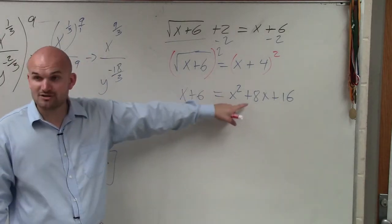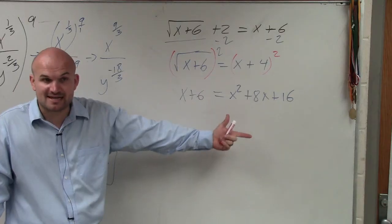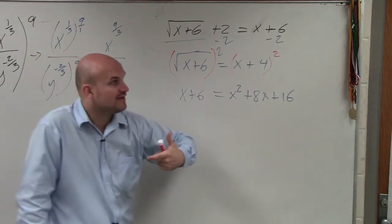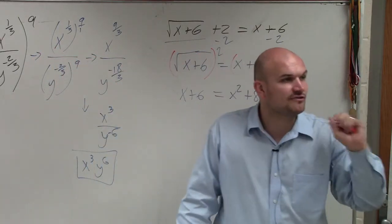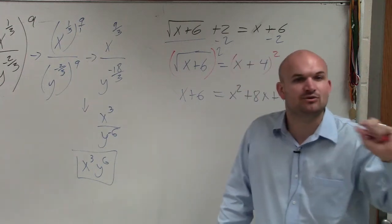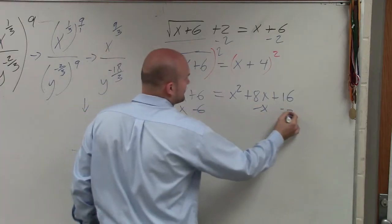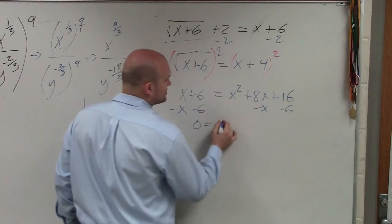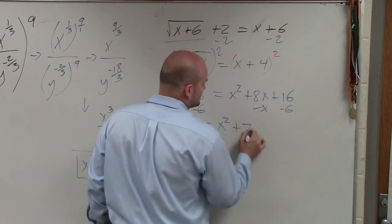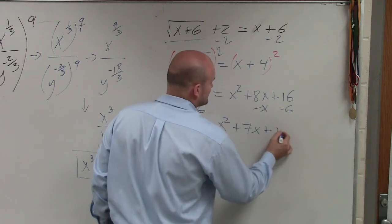Now we have to do a quadratic. We're trying to solve for the values of x. If you guys remember, when we were solving quadratics, the first thing we did was set our equation equal to 0. So I'm going to subtract an x and subtract a 6. Therefore, I have 0 equals x squared plus 7x plus 10.